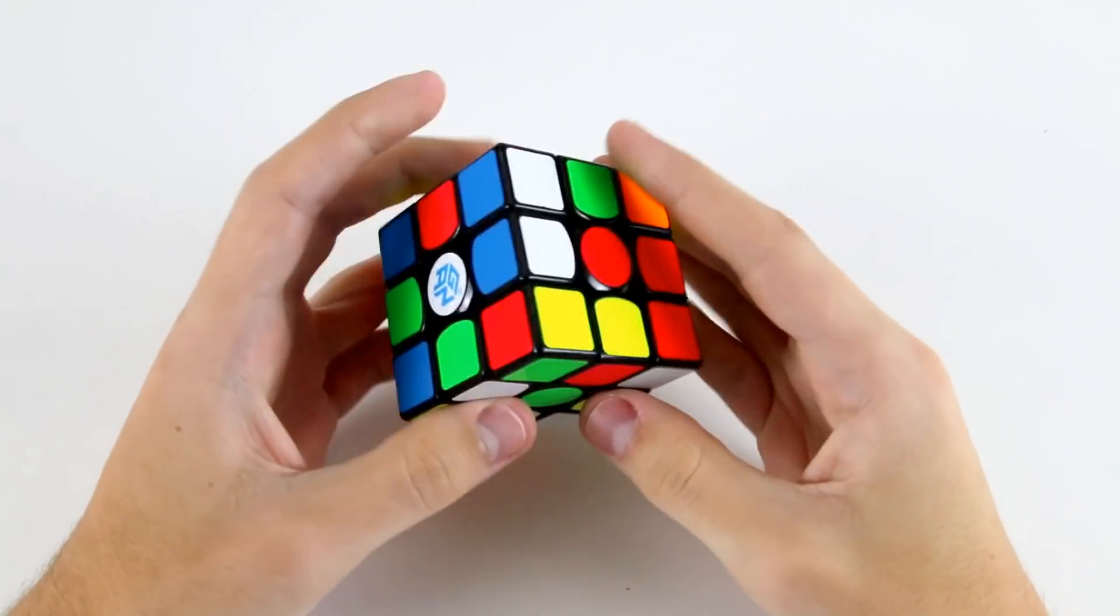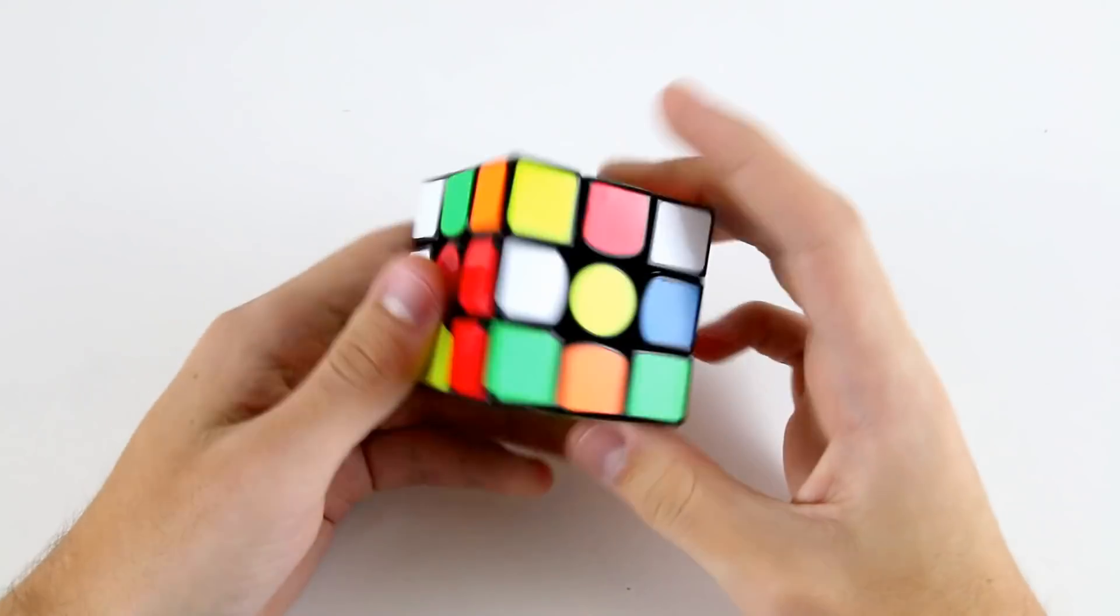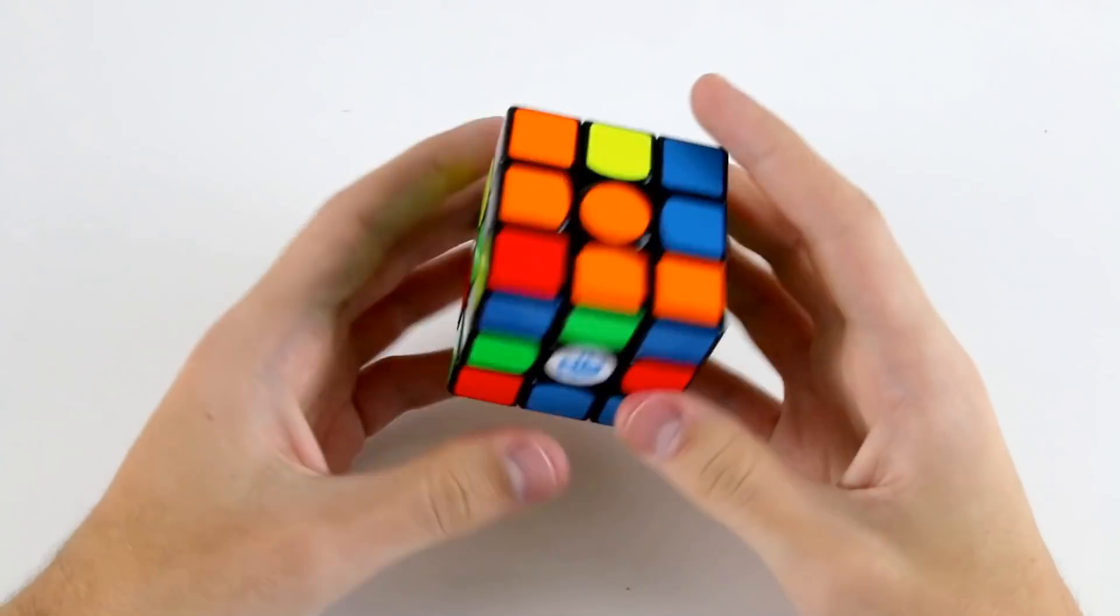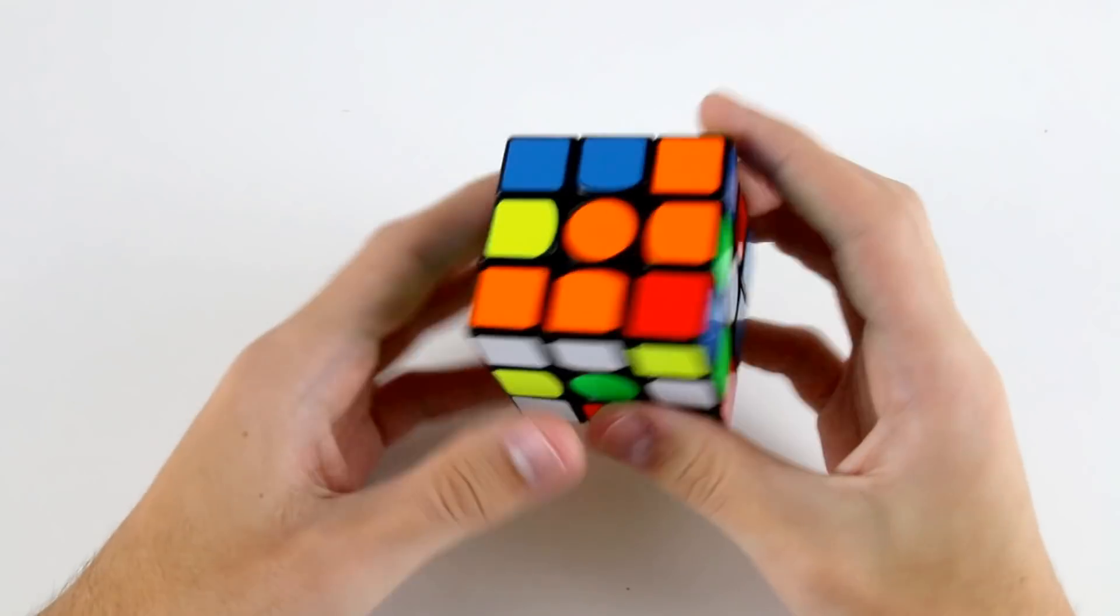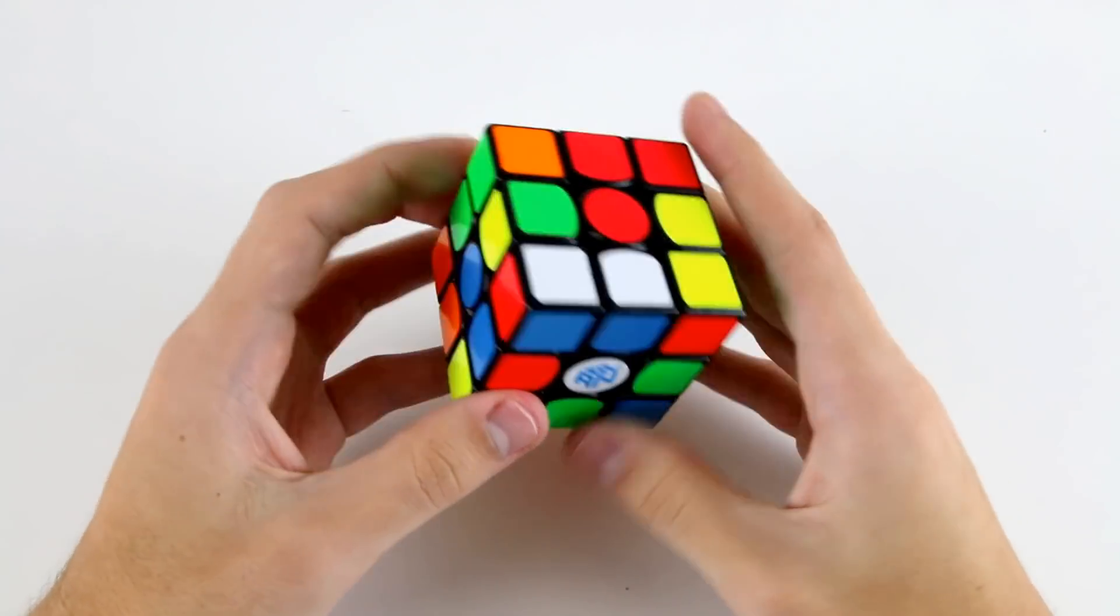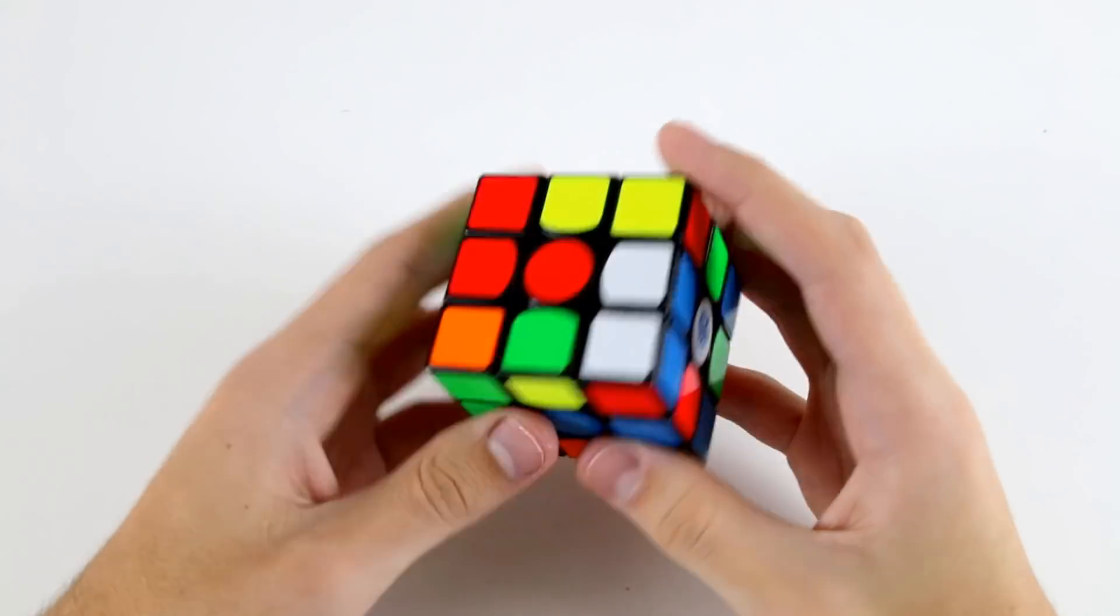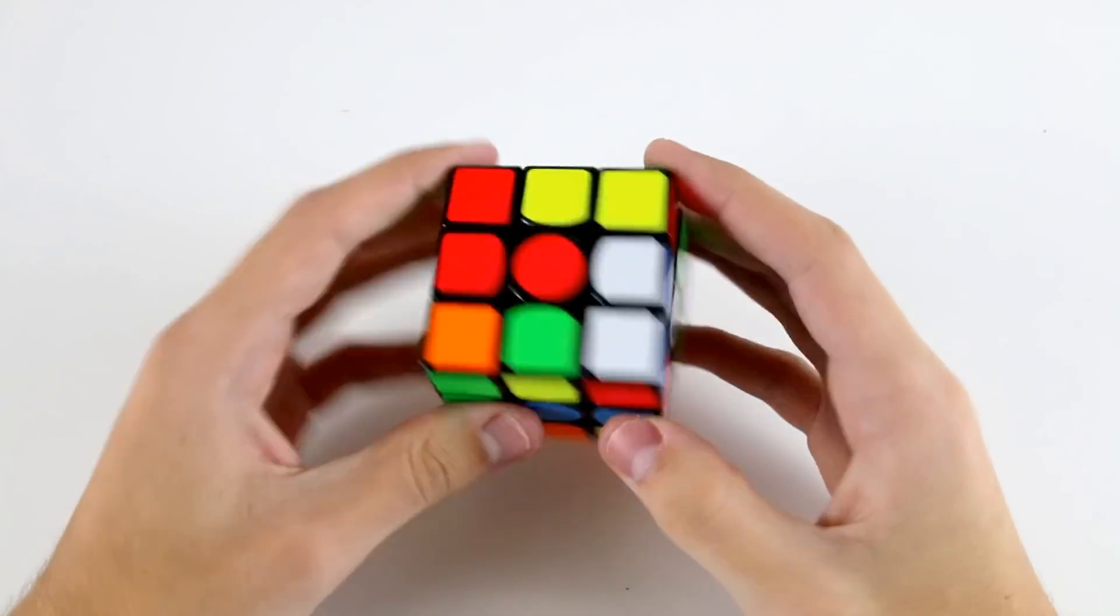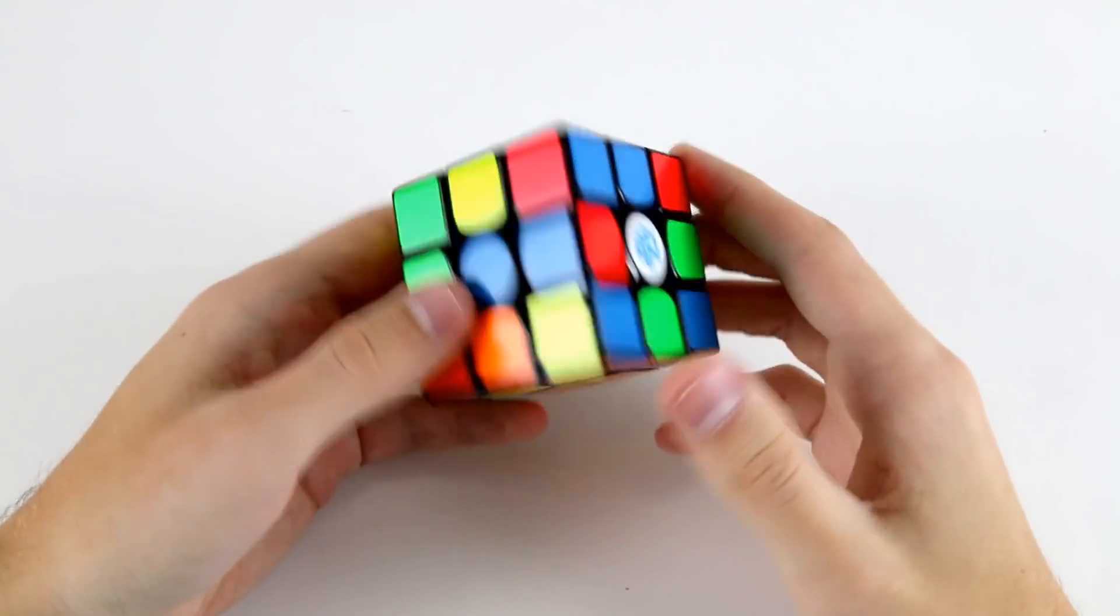Looking at this scramble there's various different options. Red looks reasonably easy, blue looks reasonably easy, orange looks reasonably easy, so I think there's not going to be a huge difference in terms of move count with regard to which cross color we choose. It's better off just choosing one and then trying to inspect as much as possible.